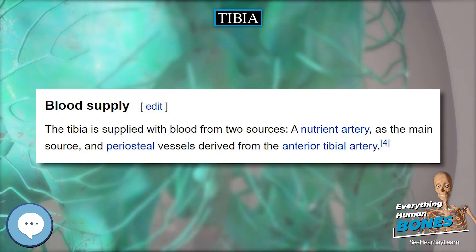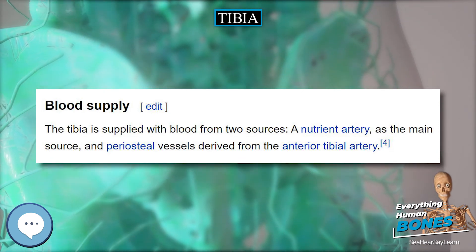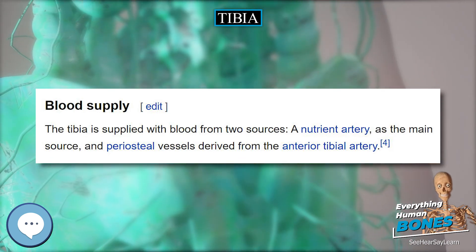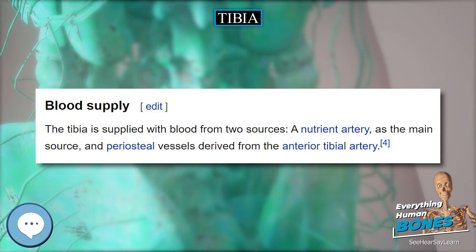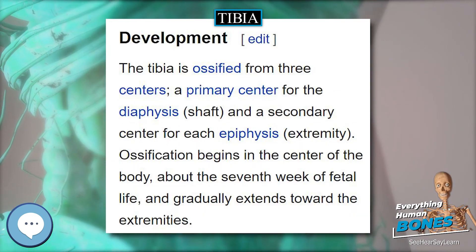Society and culture. In Judaism, the tibia, or shank bone, of a goat is used in the Passover Seder plate.